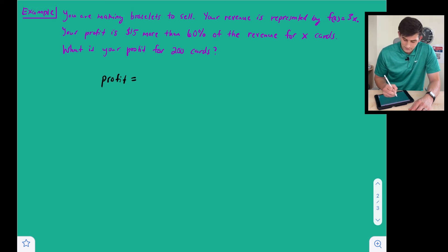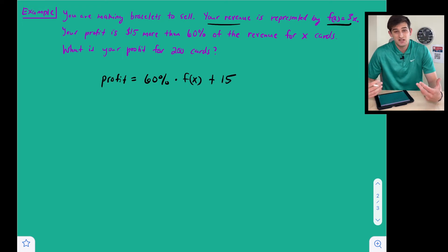So let's kind of start off in words first, and let's say that our profit is equal to 15 more than 60% of the revenue. So our revenue is here, so we're going to say 60% times our revenue, so f of x, and then we're going to add 15, because it says 15 more than it.